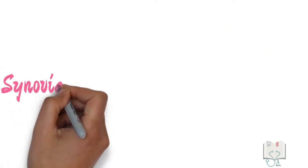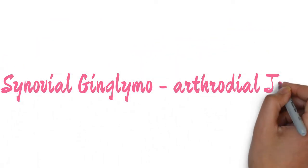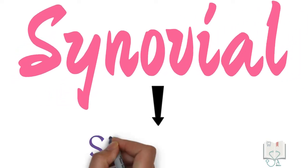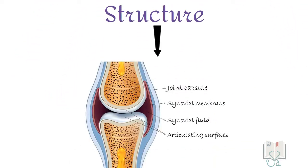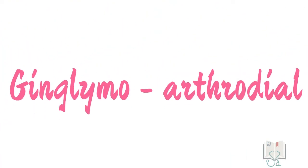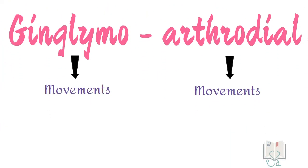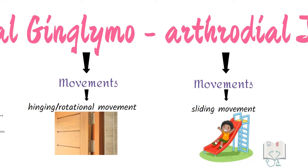The temporomandibular joint is a synovial ginglimo-arthrodial joint. That is, on the basis of its structure, it has a synovial cavity filled with synovial fluid. Furthermore, depending on its movement, the joint shows both hinging or rotational movement and sliding movement.